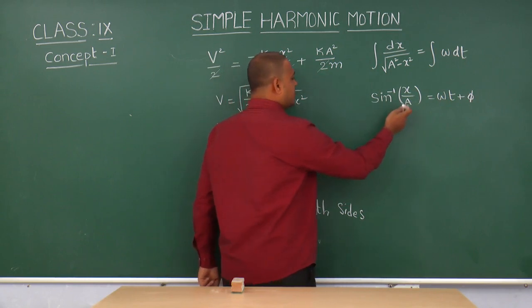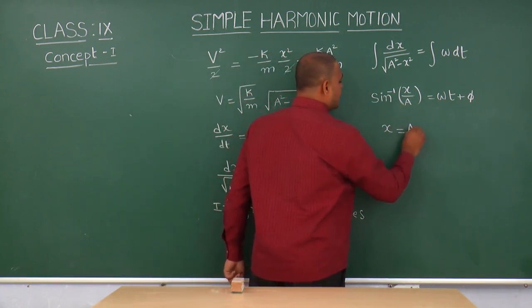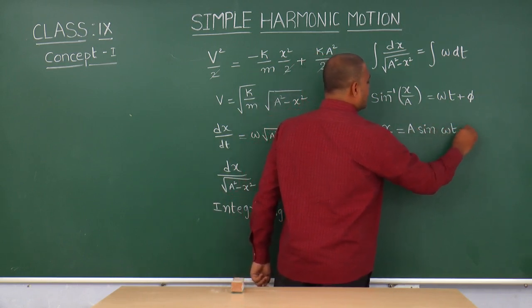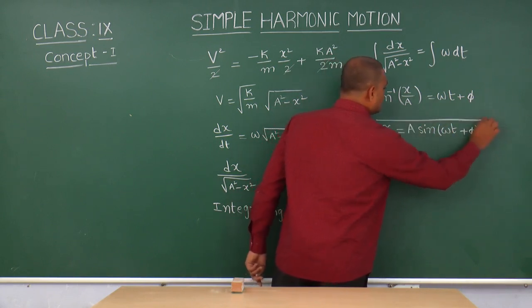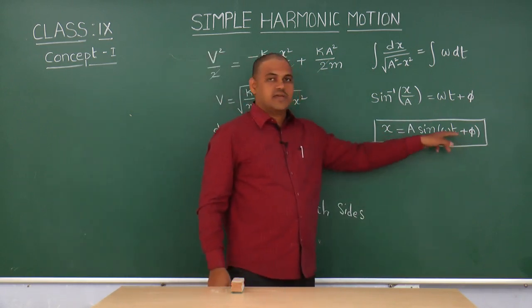So from this, we can written as x is equal to a into sin omega t plus phi. So x is equal to a into sin omega t plus phi.